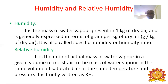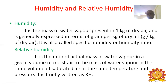Next we are going to see humidity and relative humidity. Humidity is the mass of water vapour present in 1 kg of dry air, and is generally expressed in terms of grams per kg of dry air. This is also called specific humidity or humidity ratio. Relative humidity is the ratio of actual mass of water vapour in a given volume of moist air to the mass of water vapour in the same volume of saturated air at the same temperature and pressure. It is briefly written as RH.